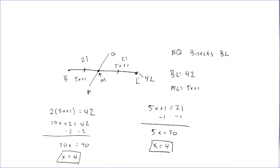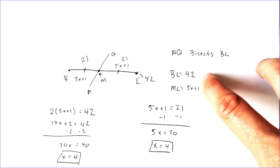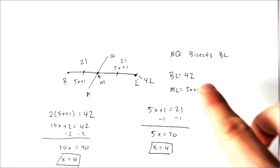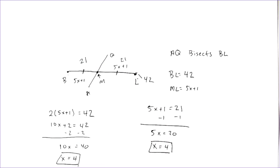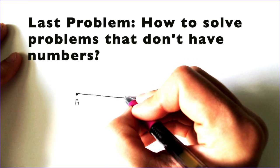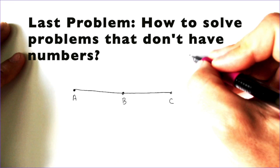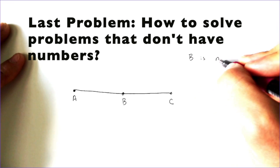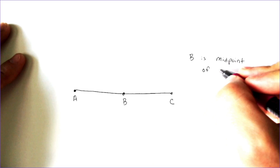It doesn't matter which way you approach it. In this case, I would recommend: when you know the entire length of the line as a whole number, just cut it in half — you know what half of it equals automatically. So, I'm going to draw a line A to C, and I'm going to call point B the midpoint of that. So B is the midpoint of AC.